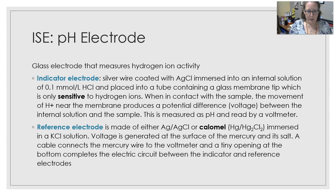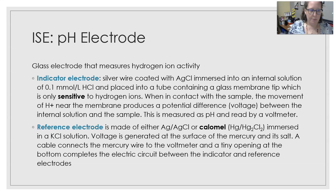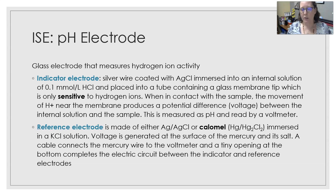This is measured as pH and read by a voltmeter. The reference electrode in the combination pH electrode is made of either a silver wire coated in silver chloride, or calomel — which is mercury coated in a mercurous chloride solution — and it is immersed in a potassium chloride solution. The voltage is generated at the surface of the mercury and its salt. A cable connects the wire to the voltmeter, and a tiny opening at the bottom of the reference electrode completes the electric circuit between the indicator and reference electrodes so measurements can take place.